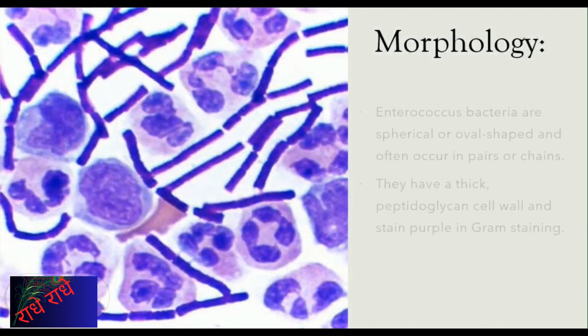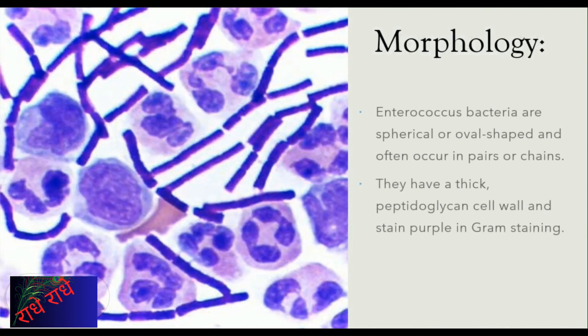Gram positive facultative anaerobes, Enterococcus bacteria form part of the normal flora of the gastrointestinal tract in animals and humans, appearing spherical or oval-shaped in pairs or chains. These bacteria possess a thick peptidoglycan cell wall and demonstrate a purple stain in a gram staining test. They can thrive in both oxygen-rich and oxygen-deprived environments.